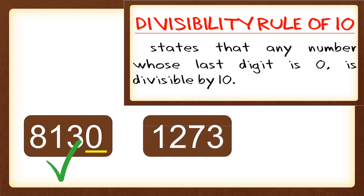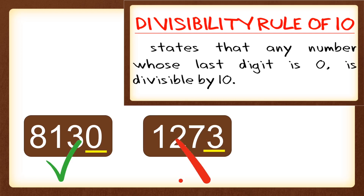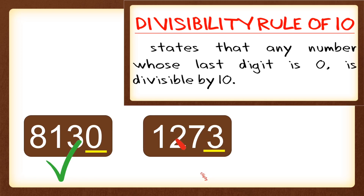Next, 1,273. Look at the last digit, which is 3. Since 3 is not 0, it is not divisible by 10. So 1,273 is not divisible by 10 because it does not end with a 0.